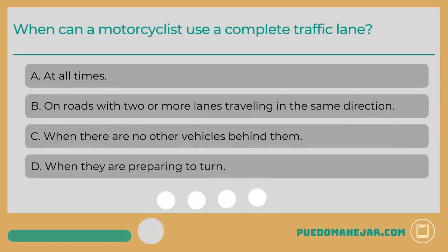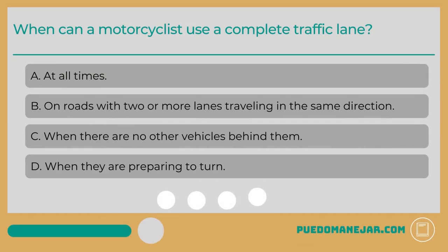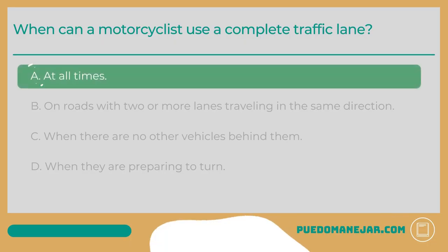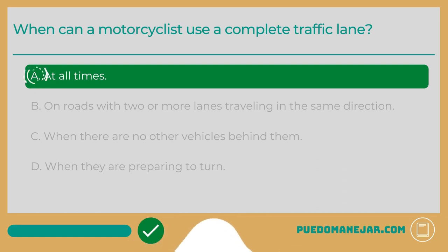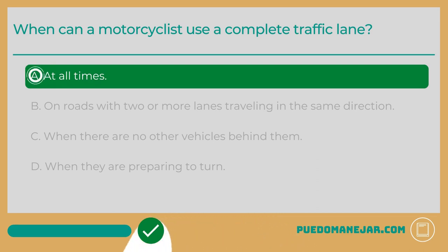When can a motorcyclist use a complete traffic lane? A: at all times. B: on roads with two or more lanes traveling in the same direction. C: when there are no other vehicles behind them. D: when they are preparing to turn. The answer is A: at all times.